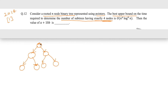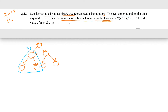We can have a recursive algorithm. For any node, we are going to recursively find the number of subtrees having exactly four nodes on the left side — let's call that n1. While computing that, we can also keep a count of the total number of nodes on the left side, and let that be x.